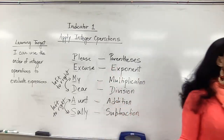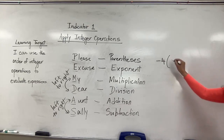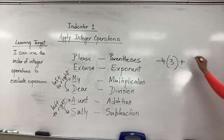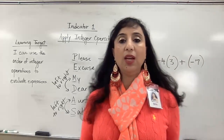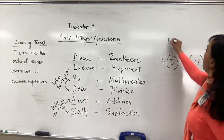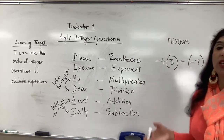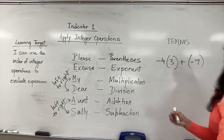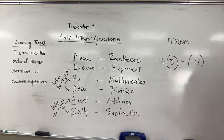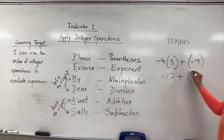Let's quickly do a problem. If I say negative 4 times 3 plus negative 7. The first thing to remember is, whenever you are starting anything with integer operations, immediately put PEMDAS on the top so we don't forget. Do we have any operations within parentheses? No. Exponents? No. Multiplication? Absolutely — and we are multiplying a negative by a positive, so negative times positive gives me negative. So negative 4 times 3 is negative 12, plus negative 7.